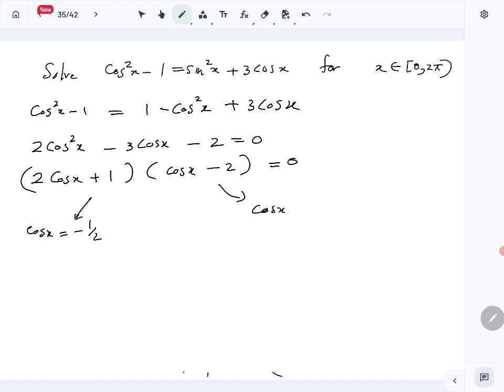From this part, cos x equals 2, which is impossible because cos x is between minus 1 and 1, so no solutions from this one.